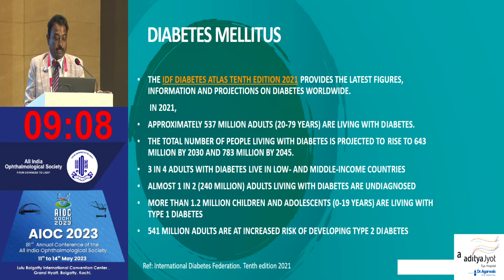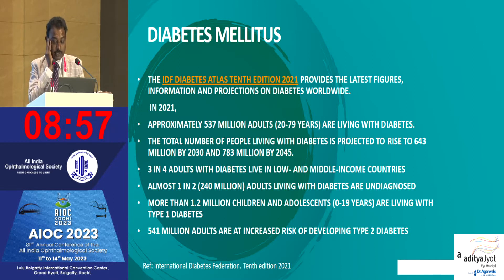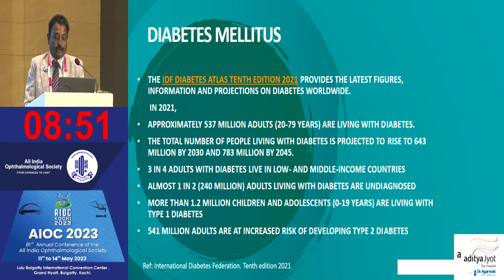Three in four adults with diabetes live in low- and middle-income countries, and almost 240 million adults living with diabetes are undiagnosed. This is a world problem. More than 1.2 million children and adolescents between 0 to 19 years are living with type 1 diabetes, and 541 million adults are at increased risk of developing type 2 diabetes.